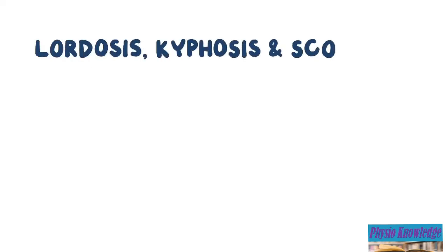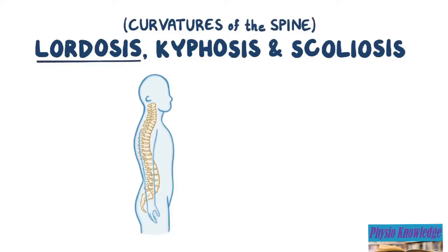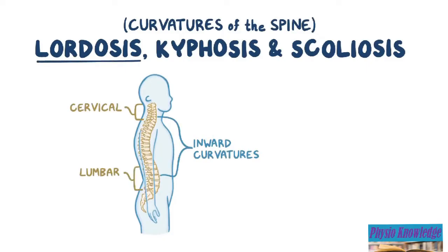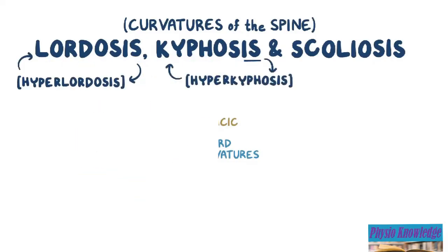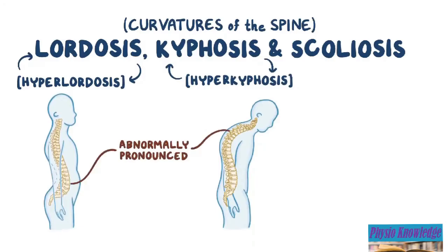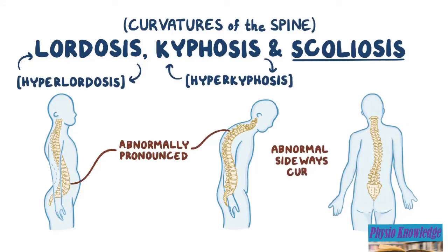Lordosis, kyphosis, and scoliosis refer to curvatures of the spine. Lordosis refers to the normal inward curvatures of the spine at the cervical and lumbar regions, while kyphosis refers to the normal outward curvature of the spine specifically at the thoracic region. These terms get used interchangeably with hyperlordosis and hyperkyphosis, which means that the curves look abnormally pronounced. Finally, there's scoliosis, which always refers to the abnormal sideways curvatures of the spine.